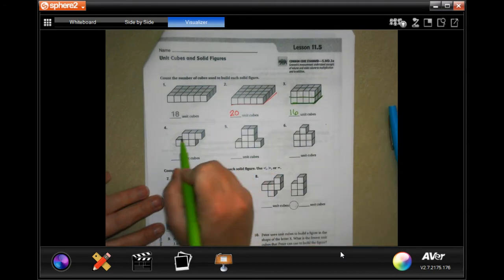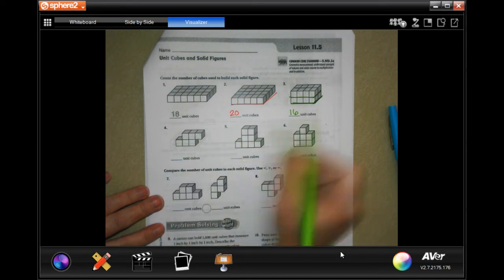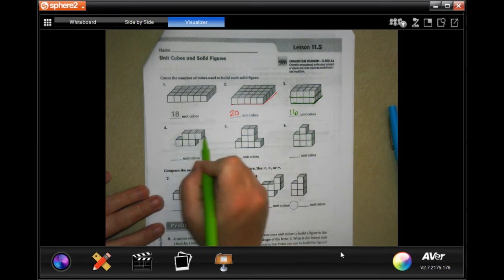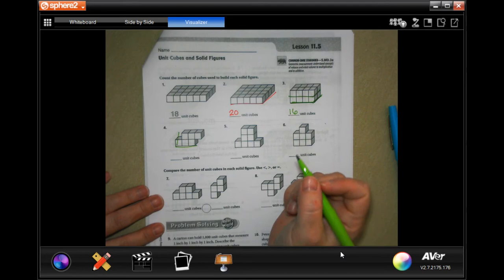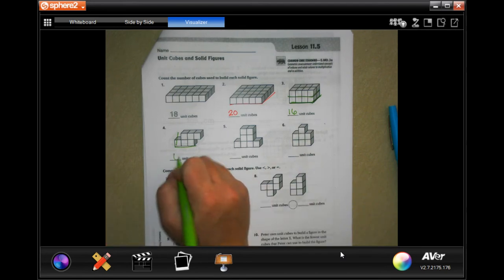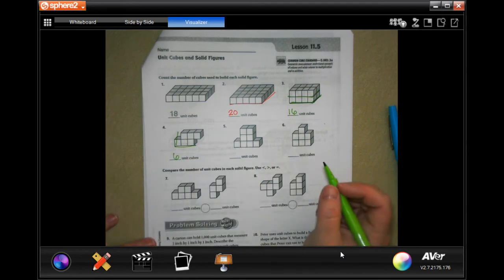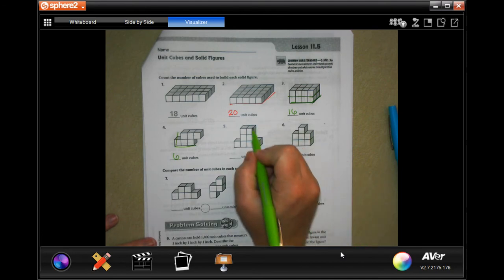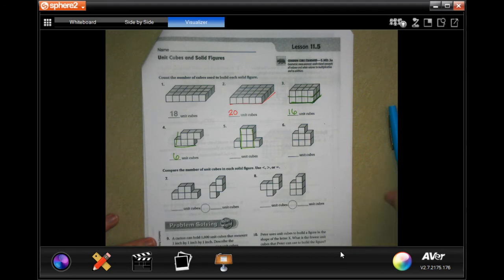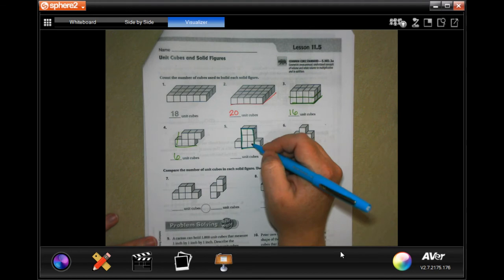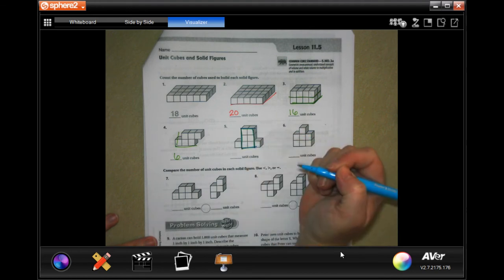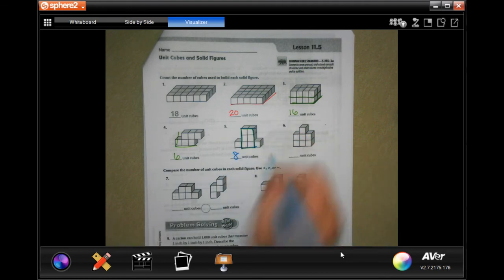So this one, if I slid this over 1, it would just be a box like that one. So I'm going to do 3 across and 2, which gives us 6. So this one, we would have our 6 there plus 1, 2, that's 8.